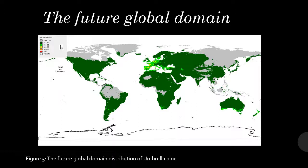This is the future global domain distribution of Umbrella Pine. We can see some changes, such as the UK and coastal areas of Europe showing much lighter shading, meaning the domain percentile is increasing. In South Africa, we can also see highlights of lime green, indicating a higher percentile for the distribution of Umbrella Pine.